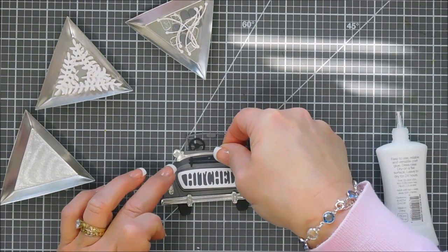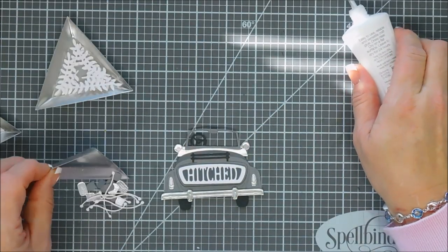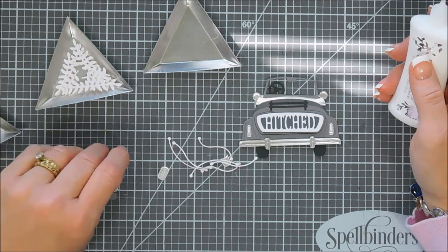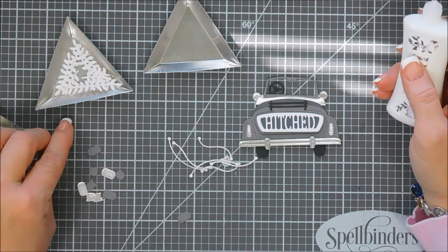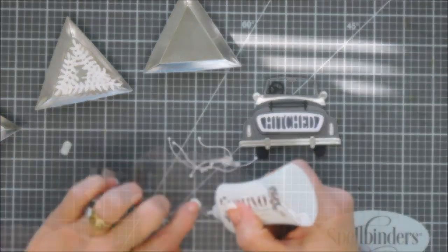In the birthday set, the main Sunday Drive set, there is a present in there. So if you wanted to use the same colors and cut out some presents and put behind that luggage rack I think that would look adorable too.